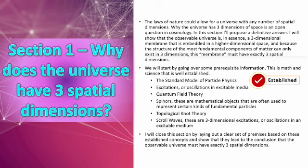In this first section, I'm going to answer the question: why do we live in a universe with three dimensions of space? The laws of nature could allow for a universe with any number of spatial dimensions. Why the universe has exactly three dimensions of space is an open question in cosmology. In this section, I'm going to propose a definitive answer. I'm going to show that the observable universe is, in essence, a three-dimensional membrane that gets embedded in a higher dimensional space. Because the structure of the most fundamental components of matter can only exist in three dimensions, this membrane must have exactly three spatial dimensions.